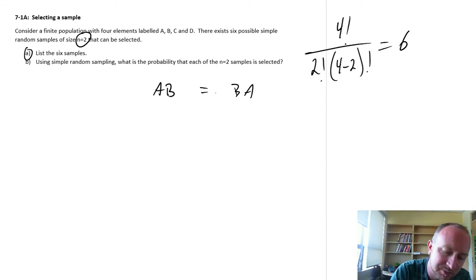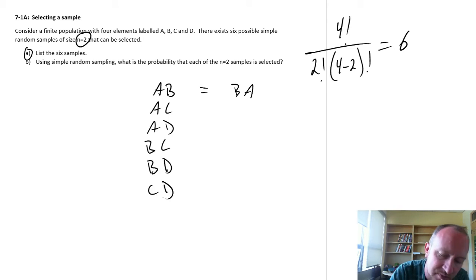So to list the six samples, I would have a and b, a and c, a and d, b c, b d, and finally c and d.